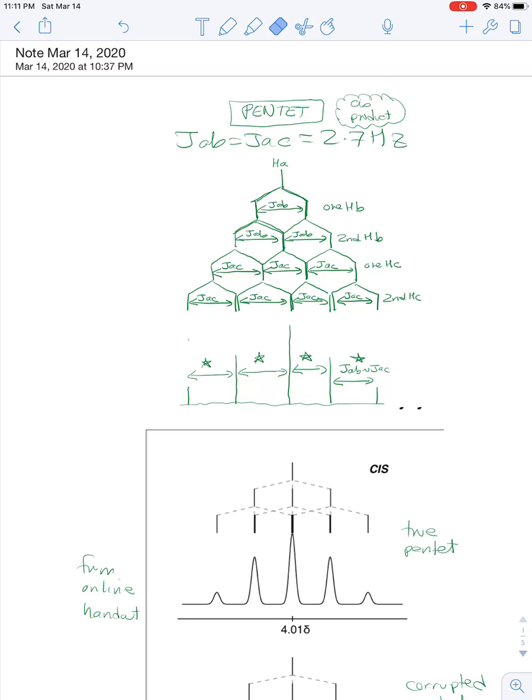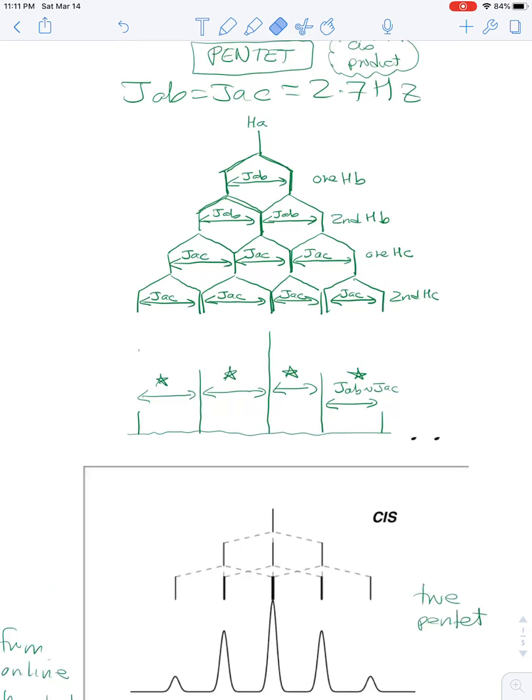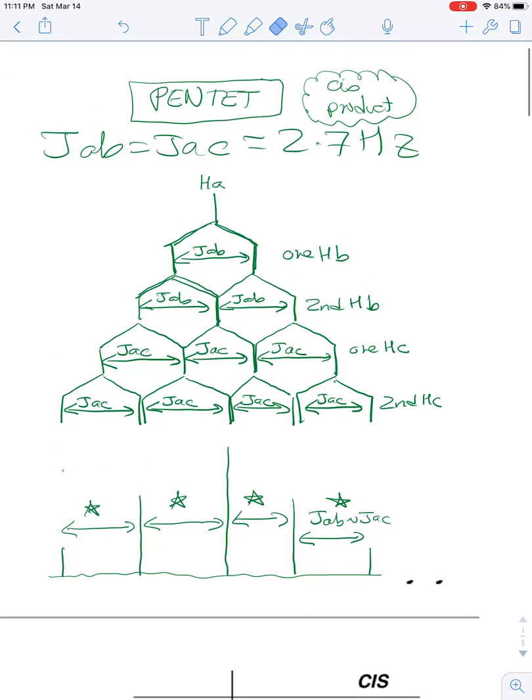We'll start again with the cis product and its pentet. I'm calling it a pentet because the two coupling constant values are the same, and that will give us a true pentet. We start with the center of the signal, and then we're going to go out equally in both directions.